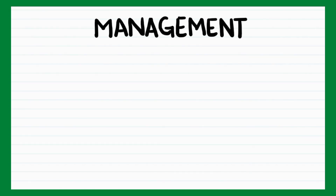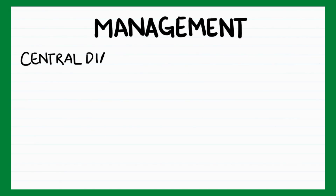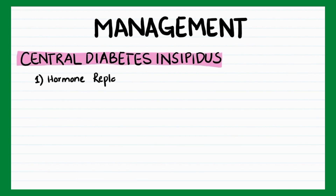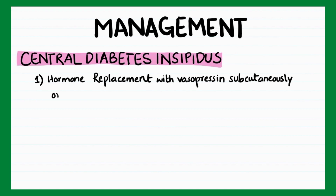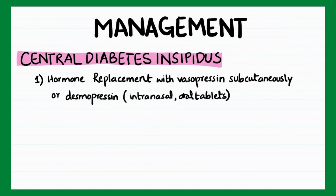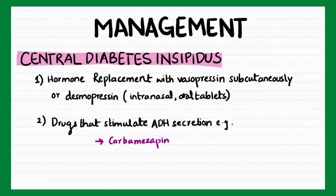For managing central diabetes insipidus, hormone replacement with vasopressin subcutaneously, or desmopressin either intranasally or by oral tablets, proves to be effective. Drugs that stimulate antidiuretic hormone secretion such as carbamazepine, chlorpropamide, and clofibrate can also be used.